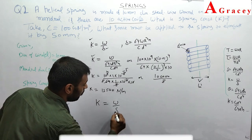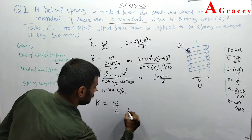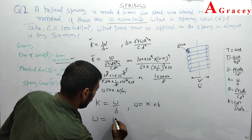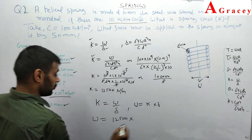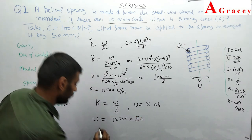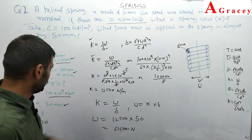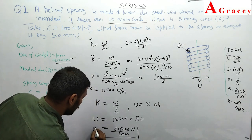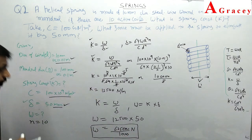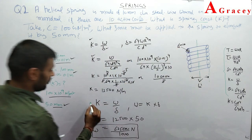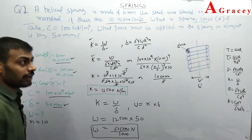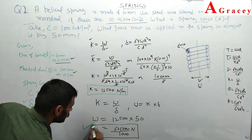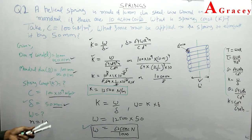With the spring constant k identified, the applied load W = k × delta = 12,500 × 0.05 = 625 newton. So when a deflection of 50 mm is produced, the load applied to the spring is 625 newton. That is the answer for question 2.